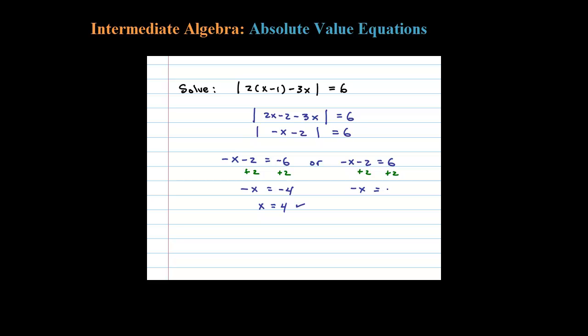Adding 2 to both sides this time, we have negative x equals 8. Multiplying both sides by negative 1, x equals negative 8. So we get two solutions.